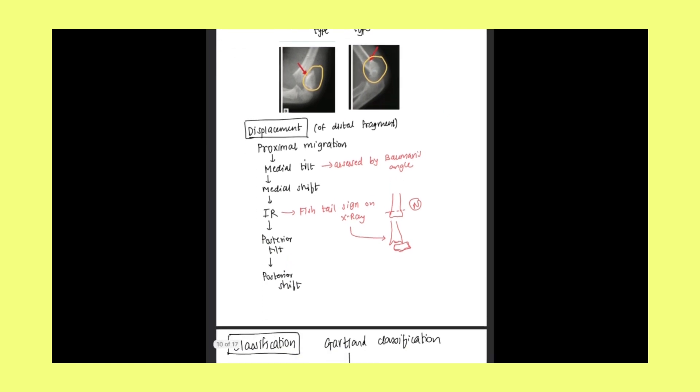Displacement of the distal fragment. What is the sequence in which displacement occurs? You need to remember this by imagining the whole situation. First of all, the distal segment undergoes proximal migration. Then it will undergo medial tilt, which is assessed by Baumann's angle. Then it will undergo medial shift, then internal rotation, then posterior tilt, and then posterior shift.